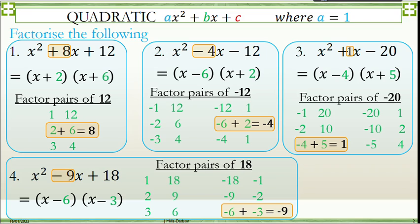So when the coefficient of x² is 1, this is the method that is safer to use. Now we are going to look at where the coefficient of x² is not equal to 1.